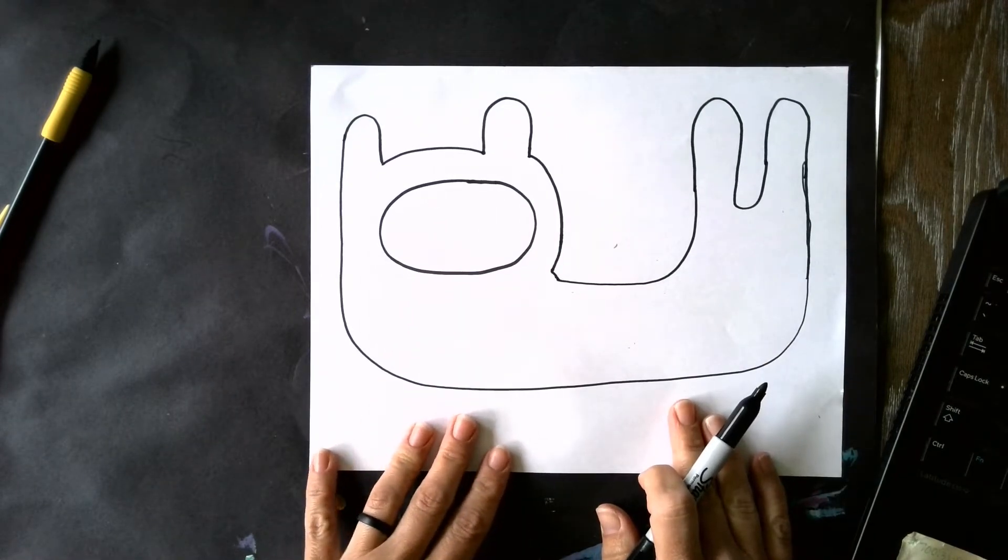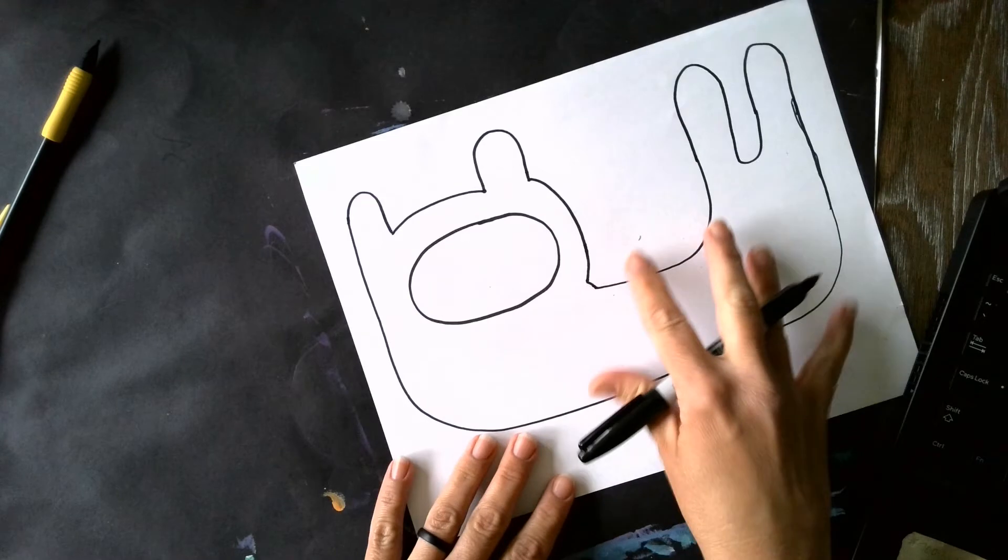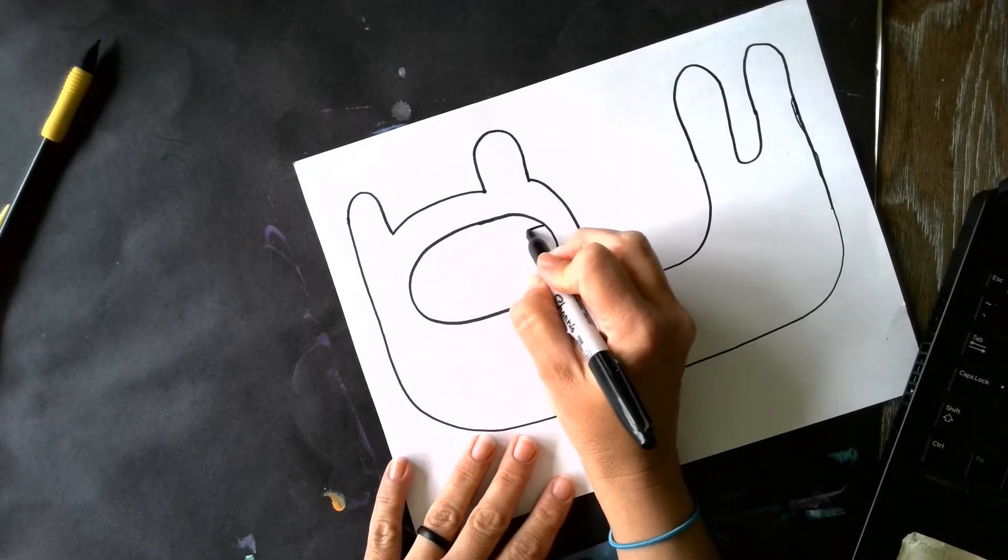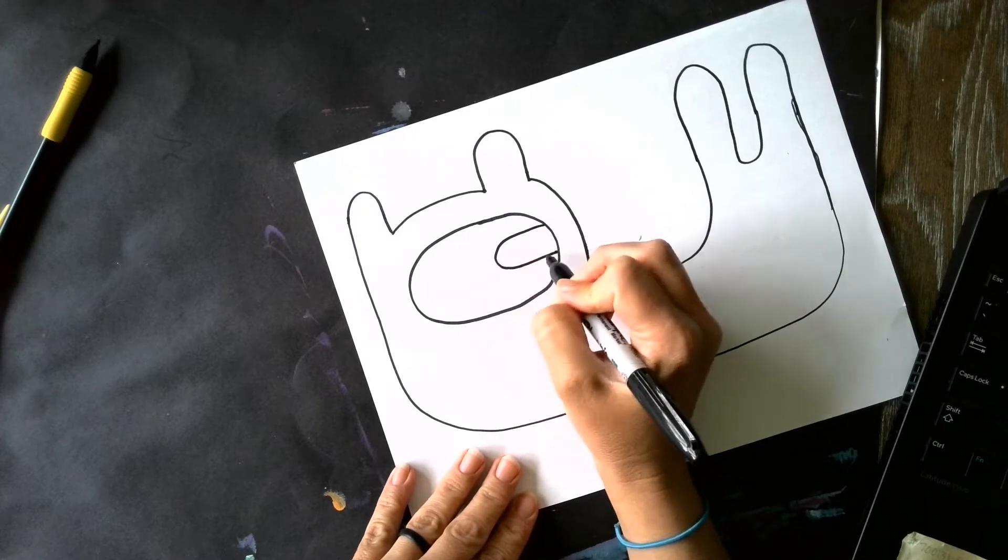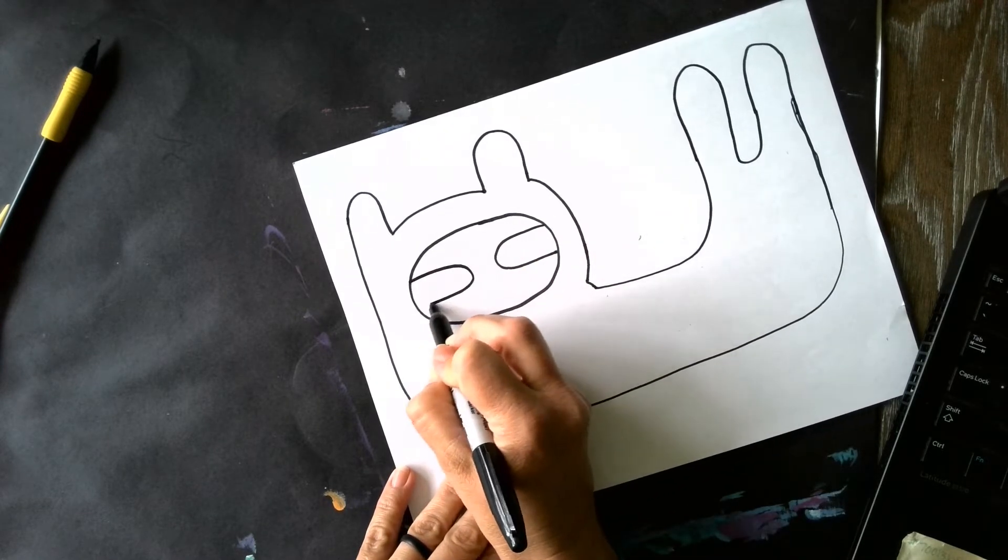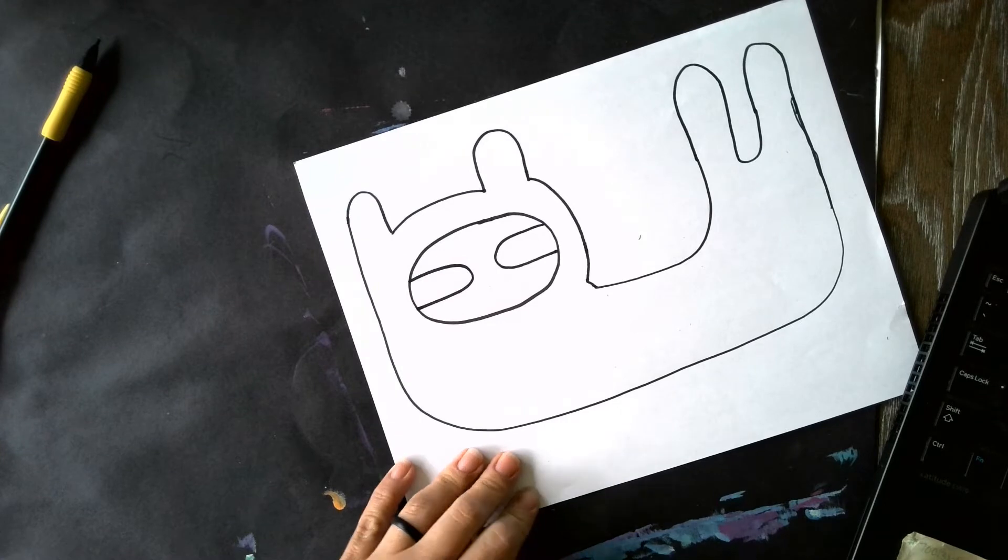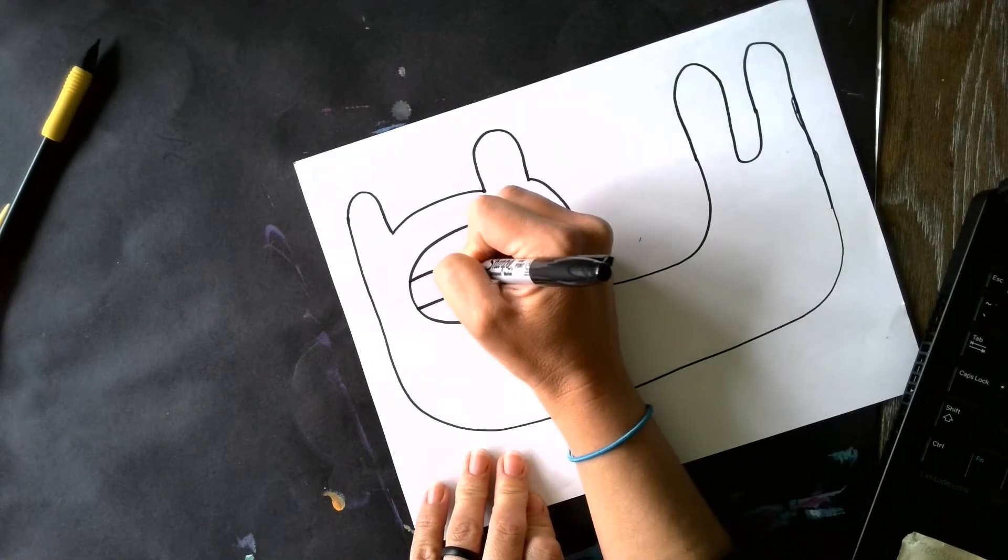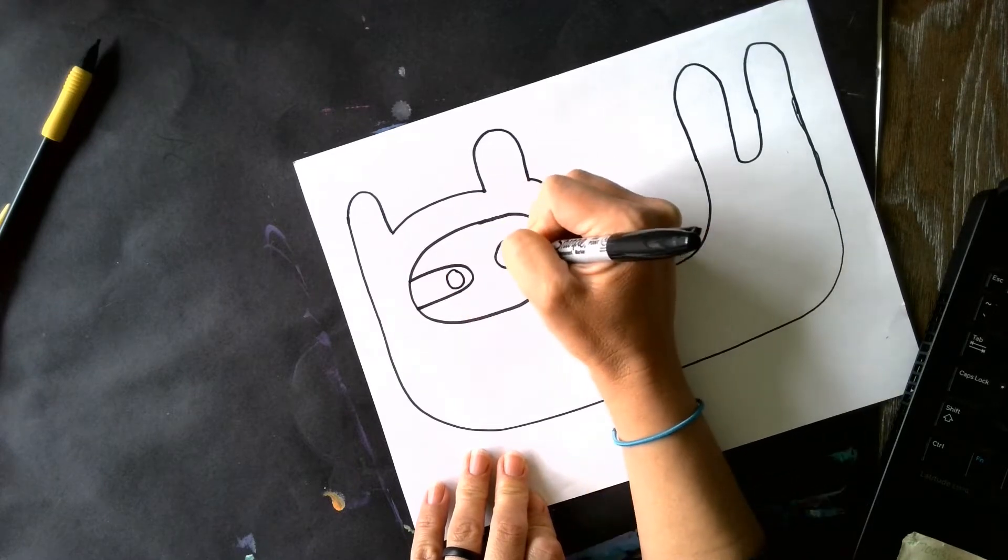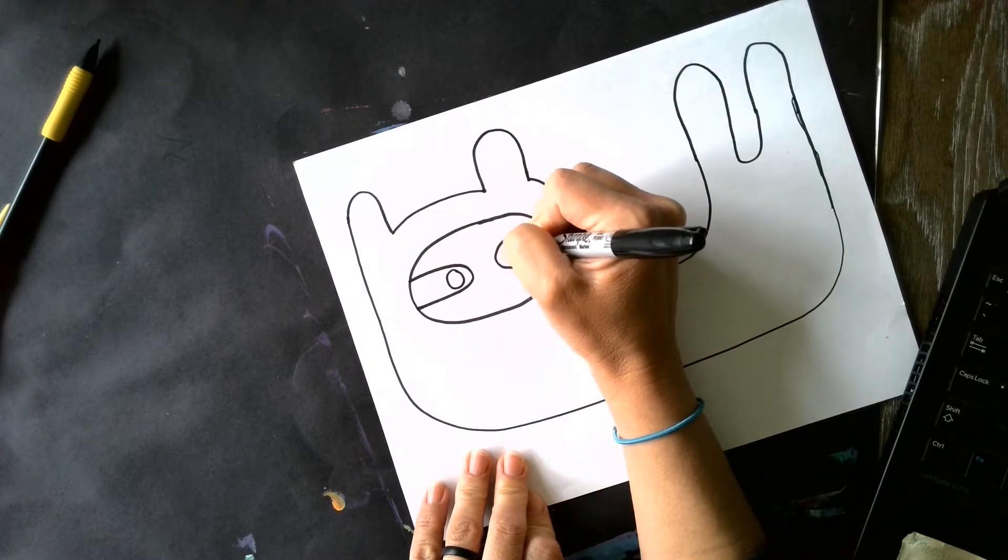So the next thing that I want to do is I want to give him his cute little face. So I'm going to kind of make a curved line on this side of his face. And then I'm going to do the same thing over there. And I'm going to draw his eyes. I like to color mine in with Sharpie.